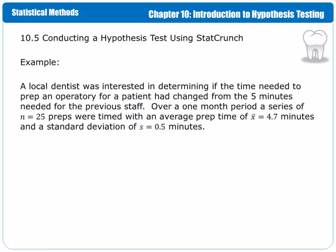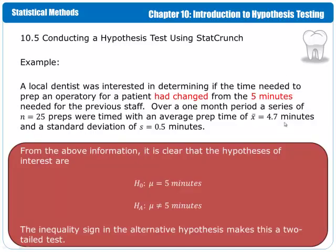If the p-value is less than our significance level or our false positive rate, then we reject the null hypothesis in favor of the alternative. If the p-value is not less than alpha, our significance level or our false positive rate, then we fail to reject the null hypothesis. The last step is then to state the conclusions of the test in the context of the study.